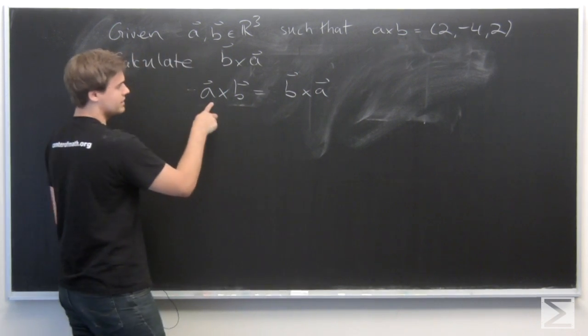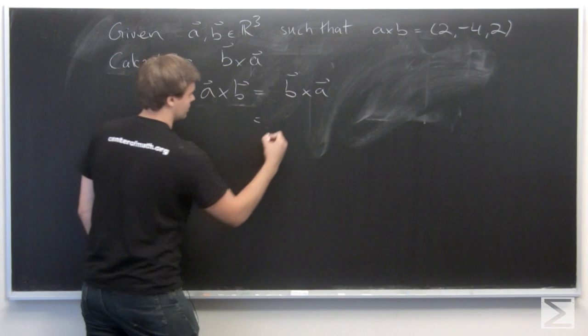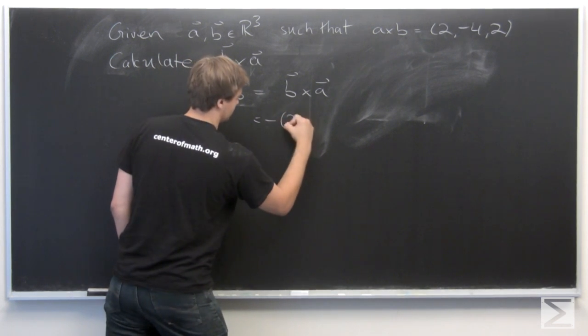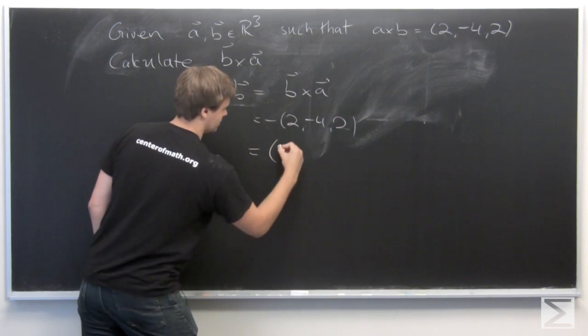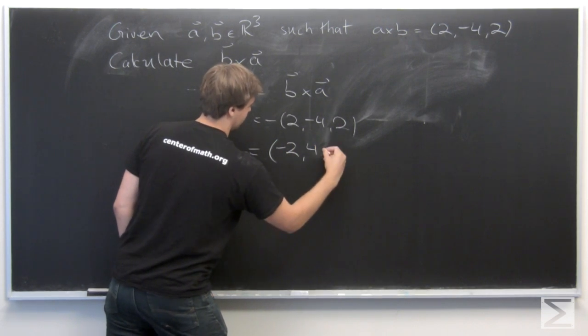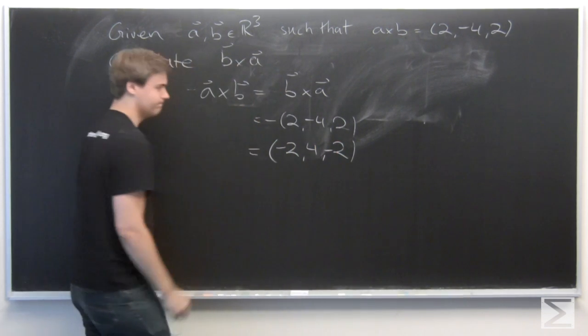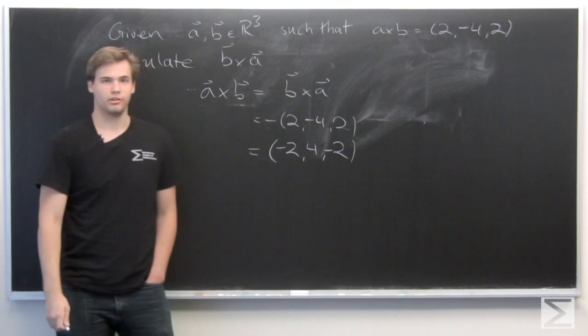But we know what this is, so this is just going to be minus 2, minus 4, 2, which is just minus 2, 4, minus 2. And that's our answer.